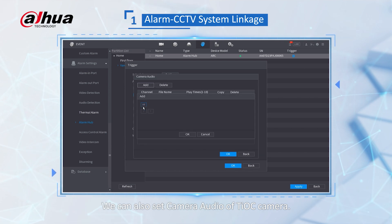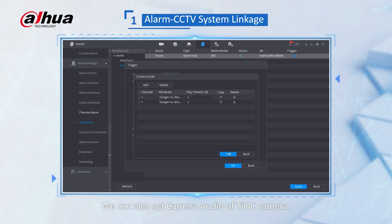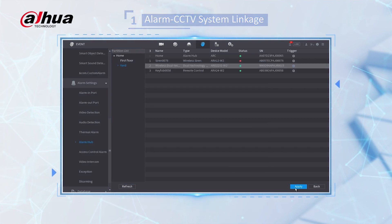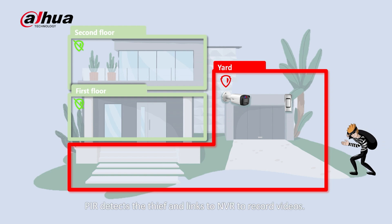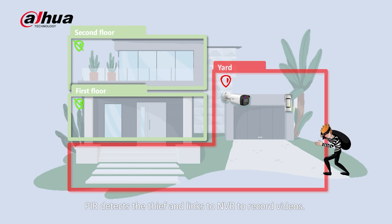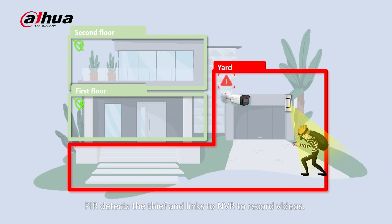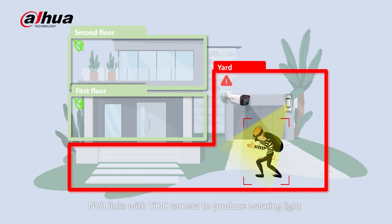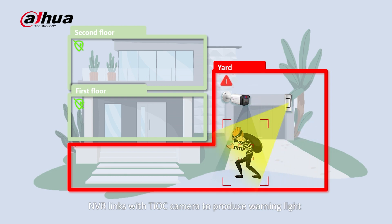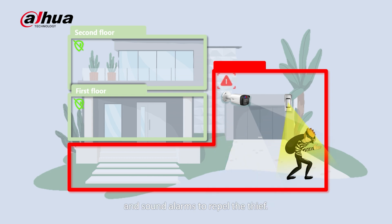We can also set the camera audio of the chalk camera. When a thief enters the defense area, the PIR detects the thief and links to the NVR to record videos. The NVR then links with the chalk camera to produce warning light and sound alarms to repel the thief.